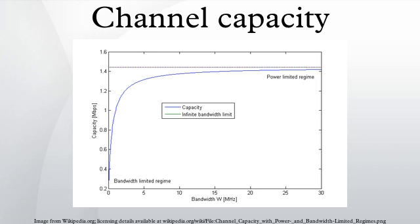When the SNR is large, the capacity is logarithmic in power and approximately linear in bandwidth. This is called the bandwidth limited regime.